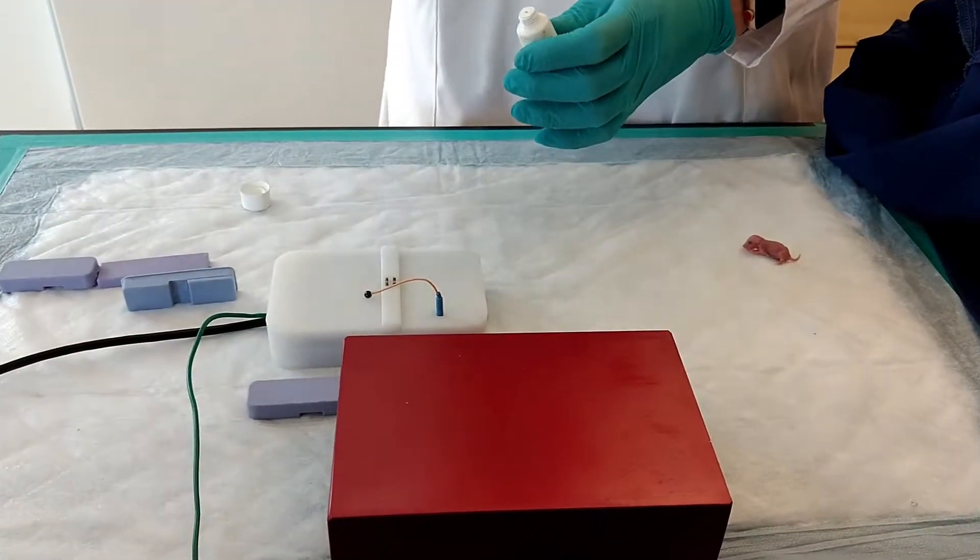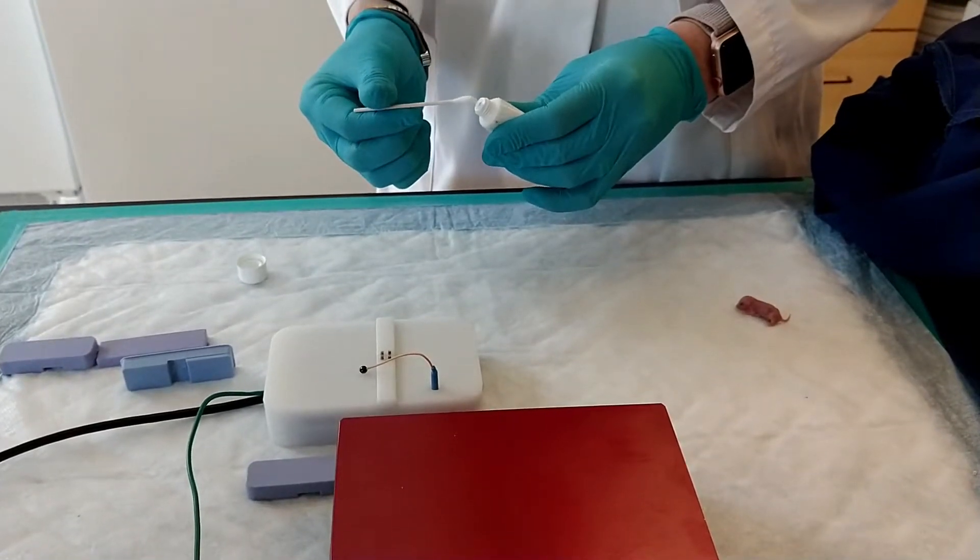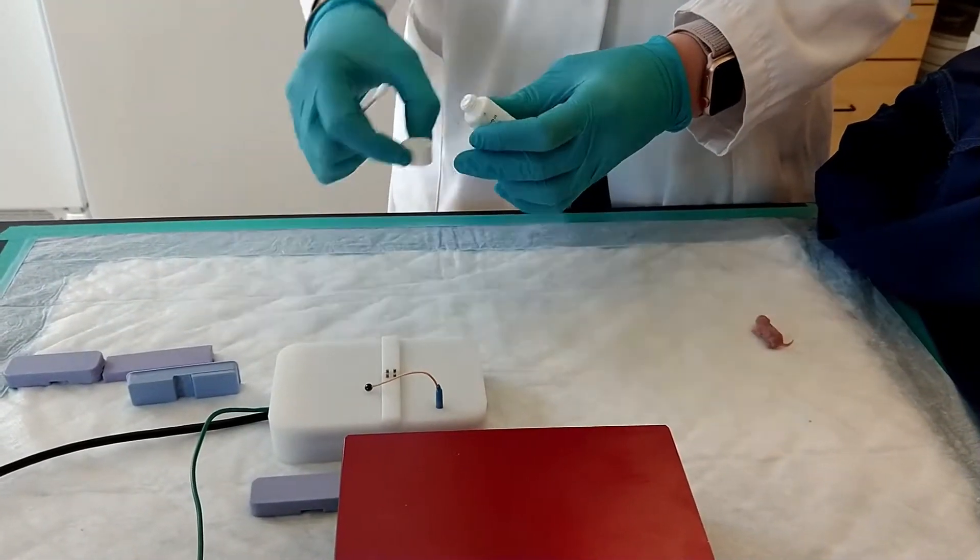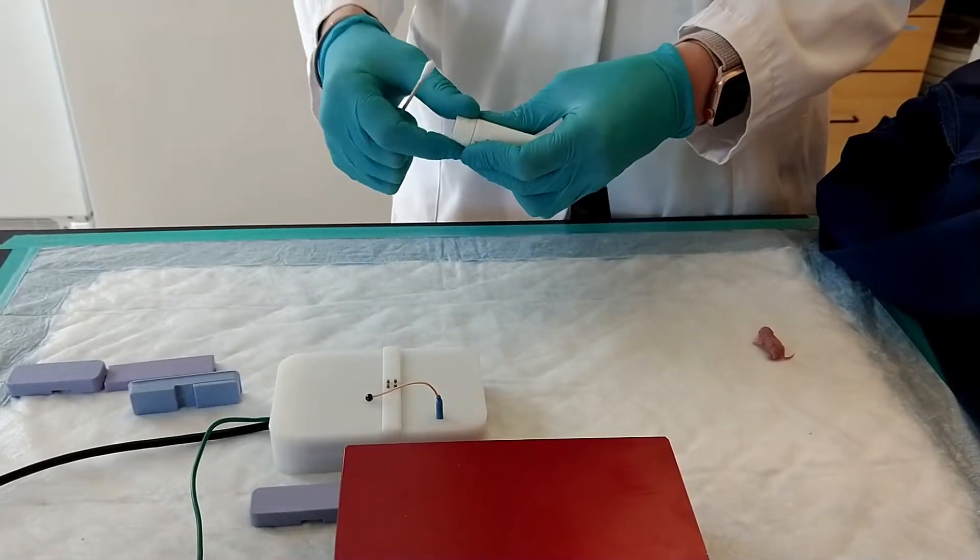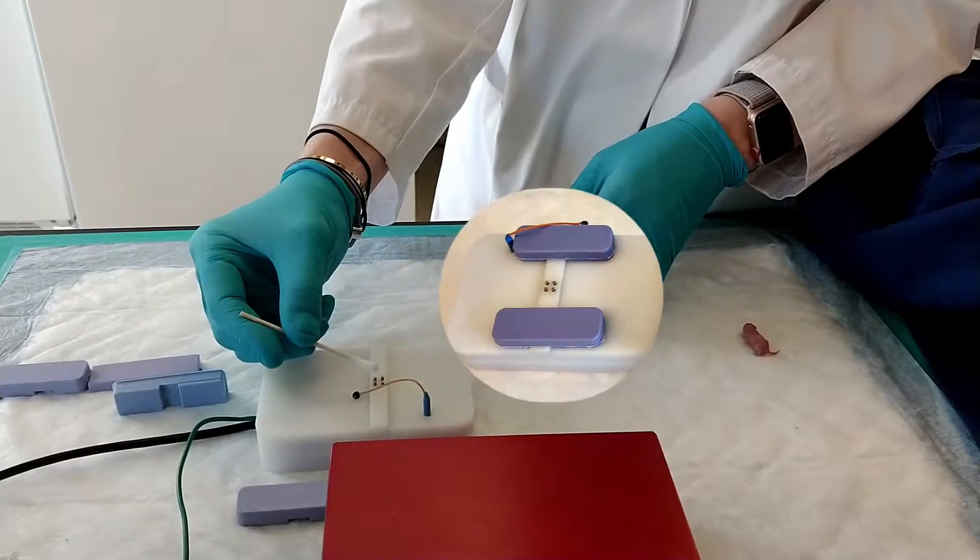Take the electrode gel, put it on a swab, and then apply it to each of the four electrodes.